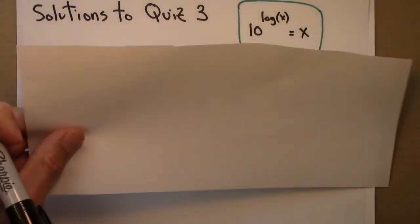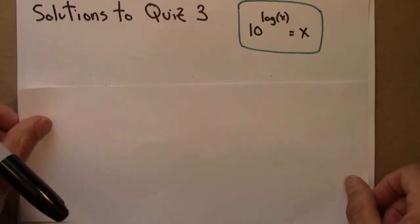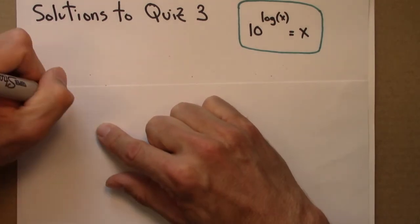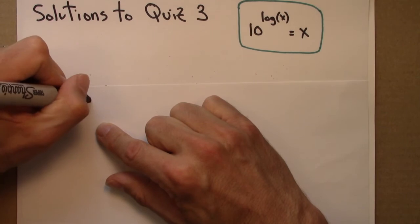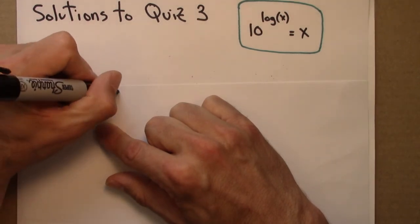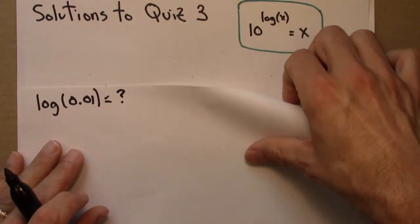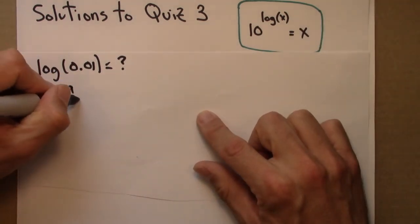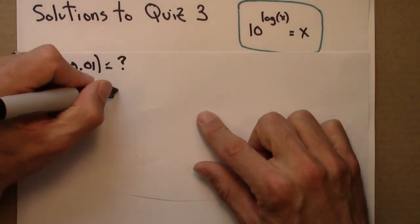Last question. Number 5. That's log of 0.01. What does that equal? Well, let's see. So I'm looking for some exponent that gives me 0.01.